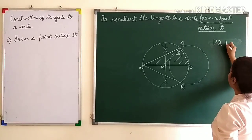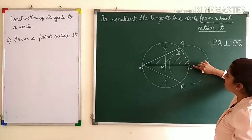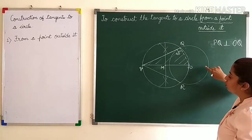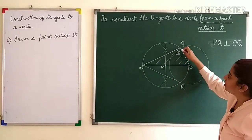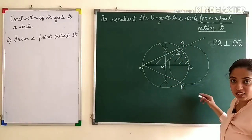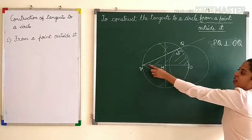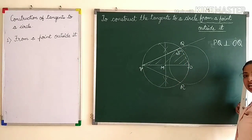So you can say PQ is perpendicular to OQ. And since OQ is the radius of the circle, a line that is perpendicular to the radius of the circle is its tangent. So you have drawn a line which is perpendicular to the radius. Therefore, PQ is a tangent.